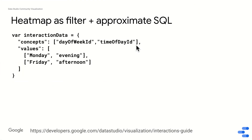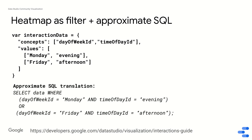Again, the approximate SQL is really helpful for understanding what's going on. The SQL translation of this data object is: SELECT data WHERE day_of_week_ID = 'Monday' AND time_of_day_ID = 'evening', OR day_of_week_ID = 'Friday' AND time_of_day_ID = 'afternoon'. Essentially, I'm selecting all data corresponding to Monday evening or Friday afternoon.